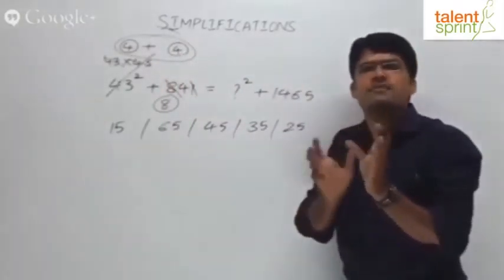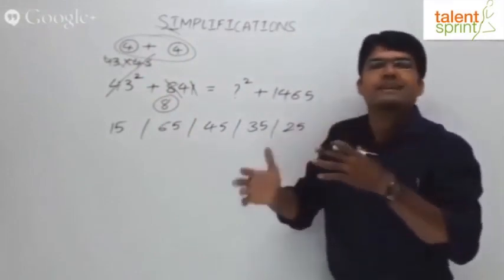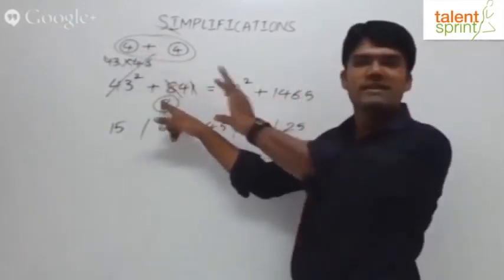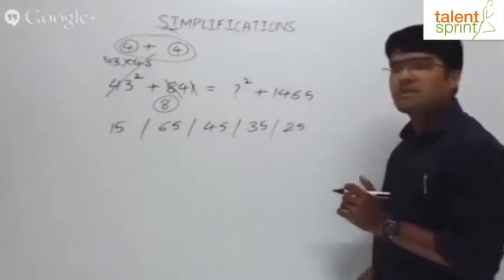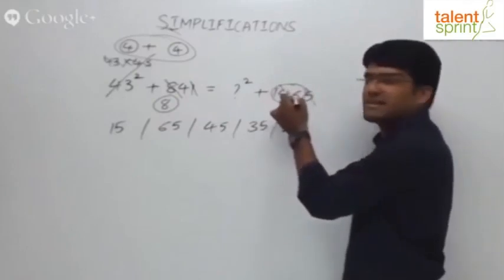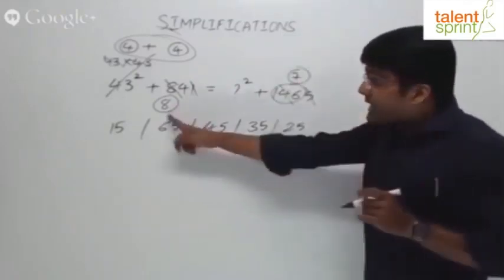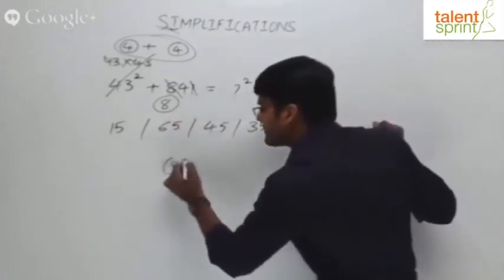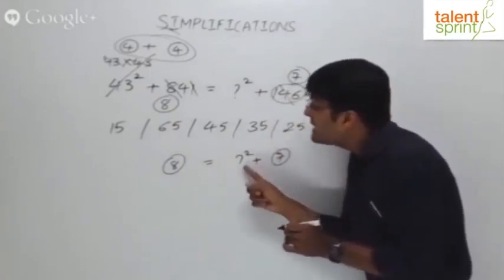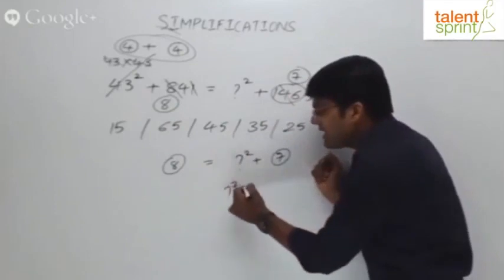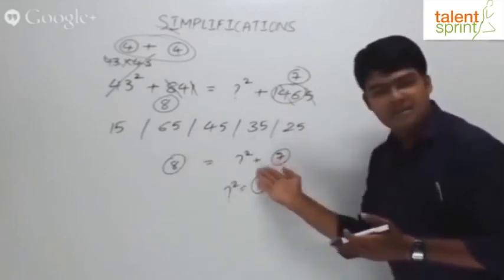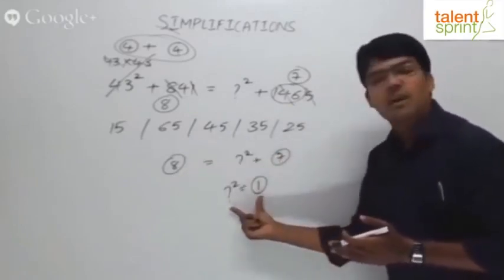The circle notation is just used to identify root-digits to avoid confusion. Left-hand side root-digit is 8. For the right side, root-digit of 1465: 4 and 5 cancel, 1 plus 6 is 7. Root-digit of 1465 is 7. Since 8 equals question mark squared root-digit plus 7, the question mark squared must have root-digit 1. Only then 1 plus 7 equals 8 and it balances.